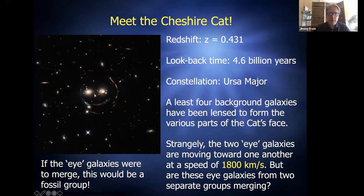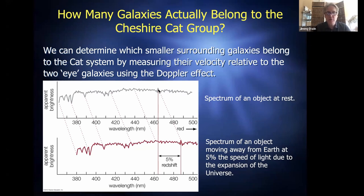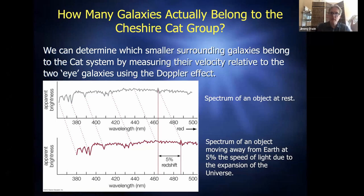One limitation: redshift only measures the velocity component along the line of sight, not perpendicular to it. So the 1800 km/s difference between the two eye galaxies is a lower limit — it captures only the toward/away component. We have indirect evidence suggesting there's very little transverse velocity and the motion is nearly all along the line of sight, which I'll get to shortly. Simulations such as the Illustris project have also successfully modeled how fossil groups should form and how they can be created or destroyed through mergers.